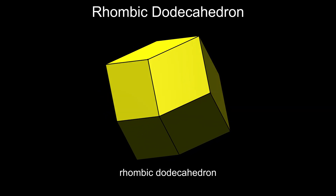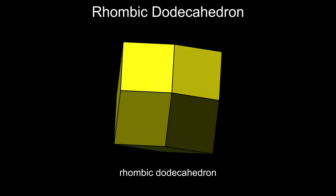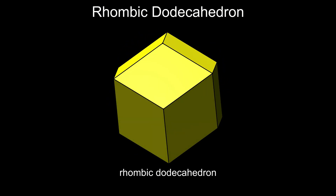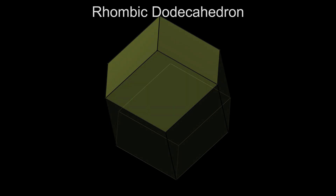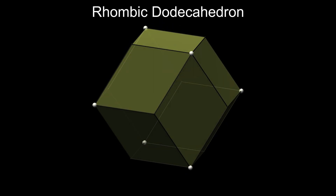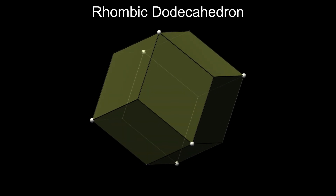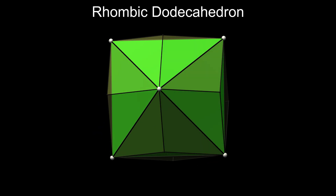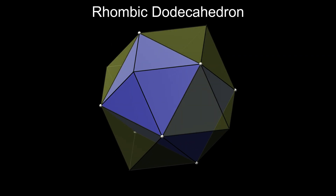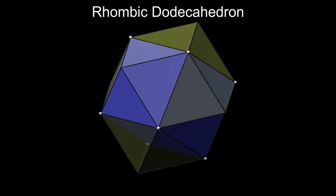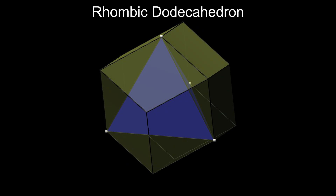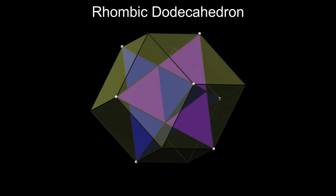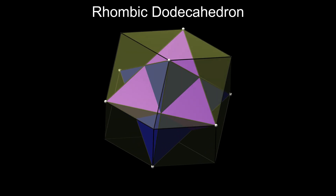As the cuboctahedron is halfway between a cube and an octahedron, the rhombic dodecahedron is closely related to both of these. Six of the vertices of the rhombic dodecahedron are the same as those of an octahedron, so you can inscribe an octahedron inside. The other eight vertices are the vertices of a cube. A tetrahedron can be inscribed in two ways, and so the stellar octangular — the compound of two tetrahedra — can also be inscribed.